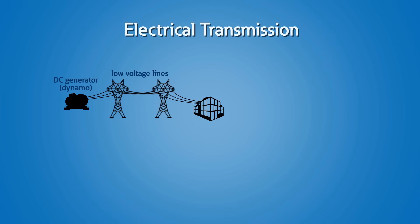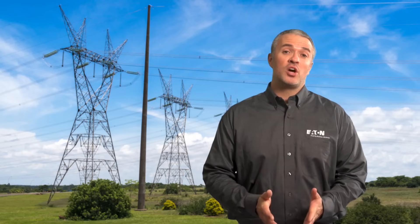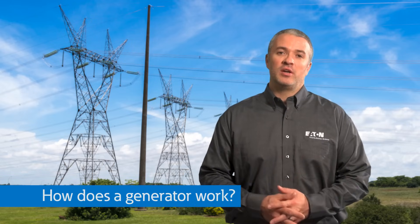DC power produced by these generators was limited because the generation source had to be close to the loads. Then came alternating current produced by AC generators, called an alternator or a synchronous generator. The major advantage of AC generation is that with transformers, the voltage levels can be changed up and down to transmit that power far distances to the loads that require it.